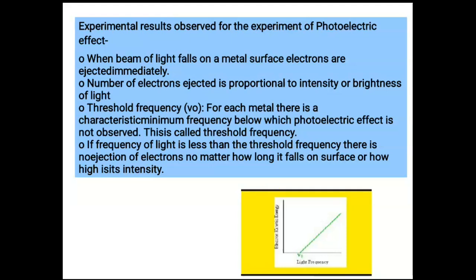Look at this graph of kinetic energy of photoelectrons versus frequency. As the frequency of radiation increases, the kinetic energy of electrons is also increasing, but the graph does not start from the zero point — it starts a bit away from zero. This was not explained by electromagnetic wave theory but was explained by Planck's quantum theory.